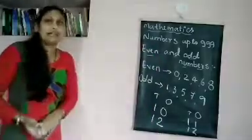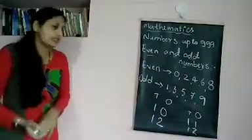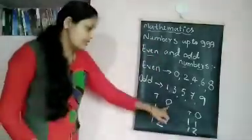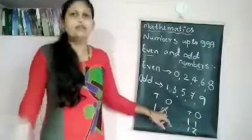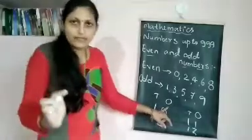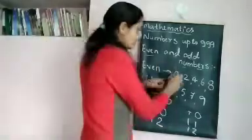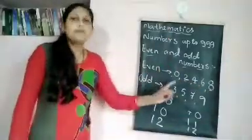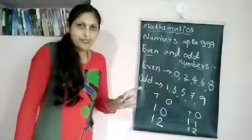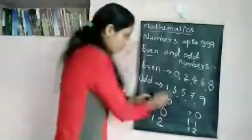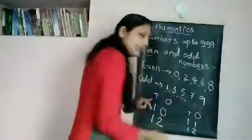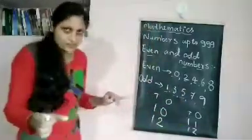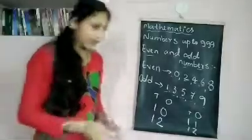To identify even and odd numbers, you must check the digit in the ones place. If the number has 0, 2, 4, 6, or 8 in its ones place, it is an even number. If the number has 1, 3, 5, 7, or 9 in its ones place, it is an odd number.